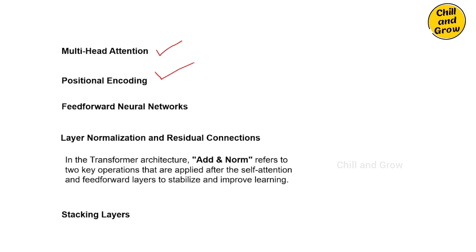Next is layer normalization and residual connections. In deep neural networks there is a problem: as information passes through many layers, important information can be lost. To address this, transformers use two concepts: layer normalization and residual connections. Residual connections allow information to skip layers — what is learned in an early layer is still available to later layers. Layer normalization stabilizes the learning process by keeping values balanced throughout the model.